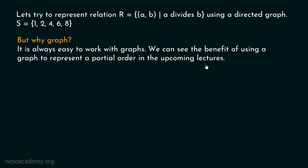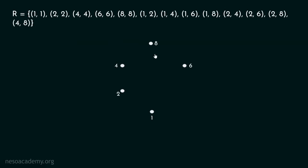Instead of listing down all the elements of a relation, it is better to represent the relation using a graph. Now we will try to draw a directed graph for this relation defined on set S. I have randomly placed all these points of the graph. These points are nothing but the elements of set S — there are five elements: 1, 2, 4, 6, and 8. These are the vertices of the graph; each vertex is an element of set S.